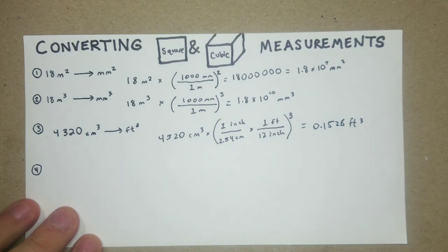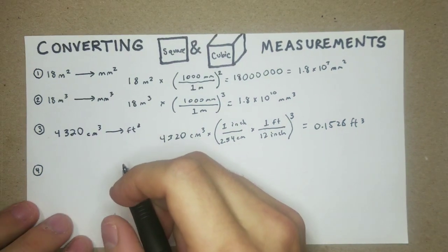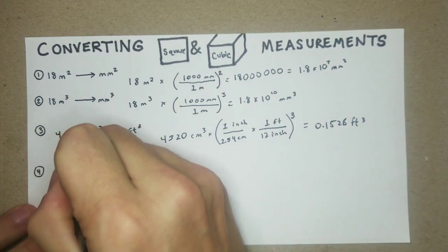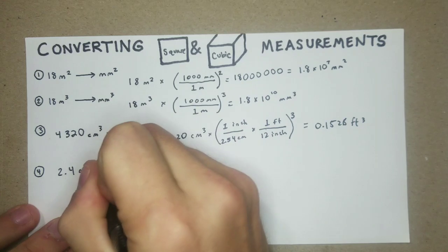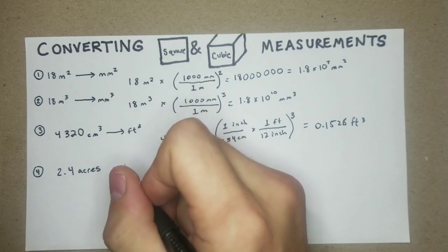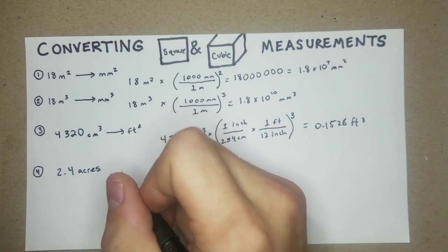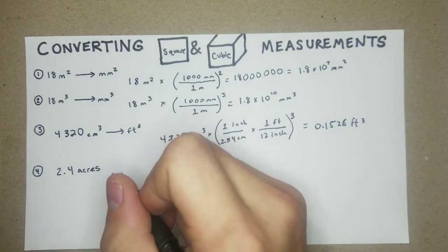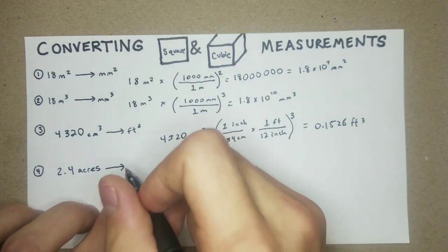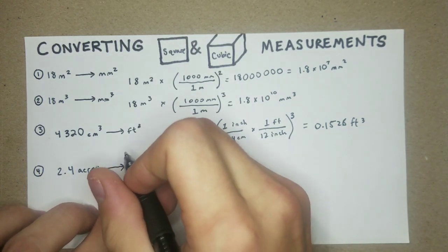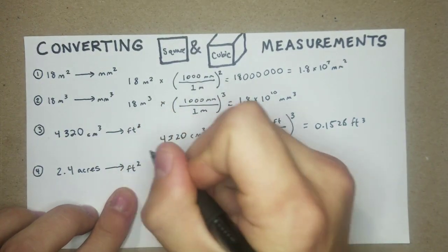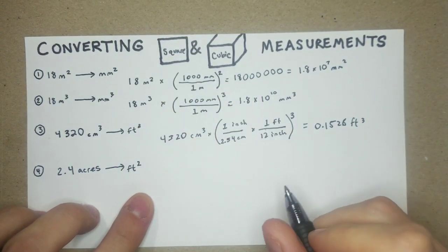Now we're on to number 4 here. This is going to be the last one. It's a little bit tricky of a question. So 2.4 acres, which if you're not sure, acres is just like a unit of area, and it's based on 4,840 square yards. But we're not going to make it too easy. We're going to try to get that into feet squared.